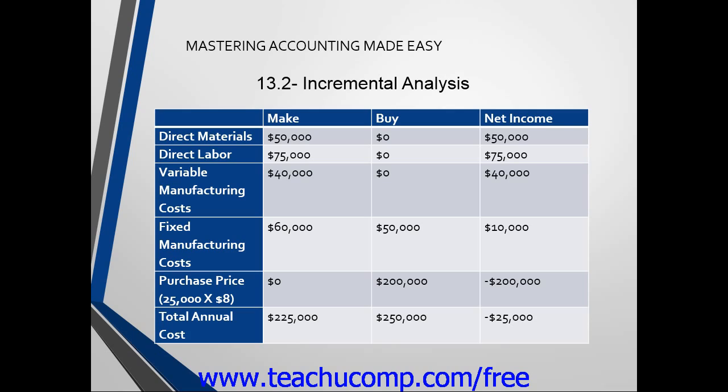This chart shows that the company will incur $25,000 of additional costs by buying this component of the product instead of manufacturing it themselves. Therefore, this company should continue to make this product in order to save money.